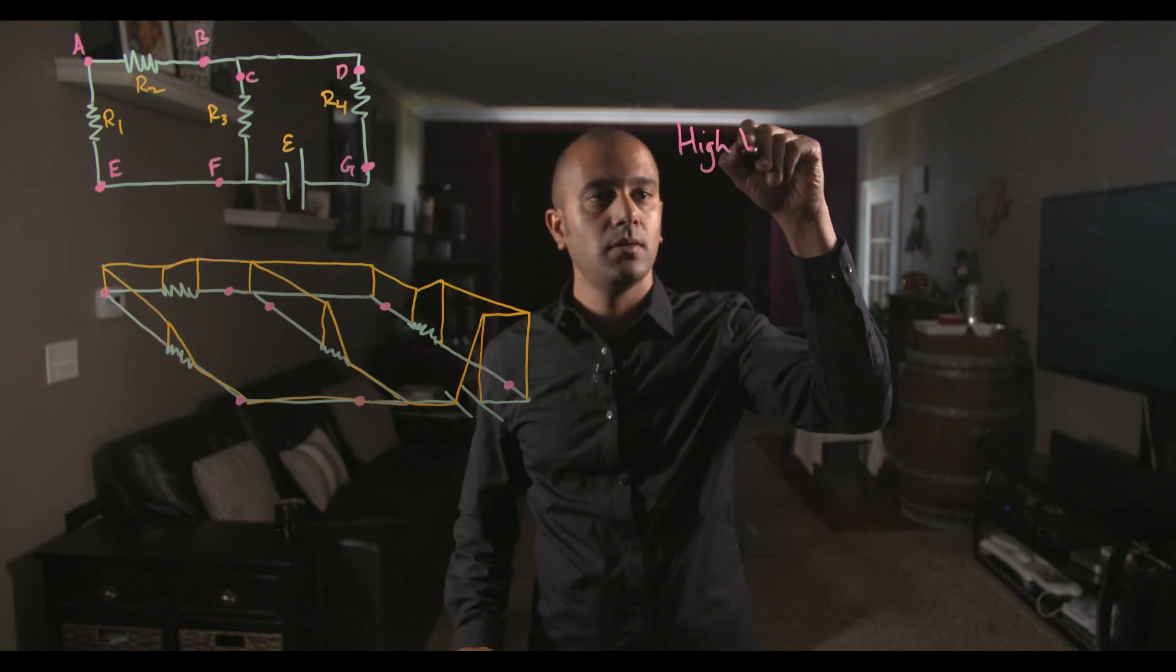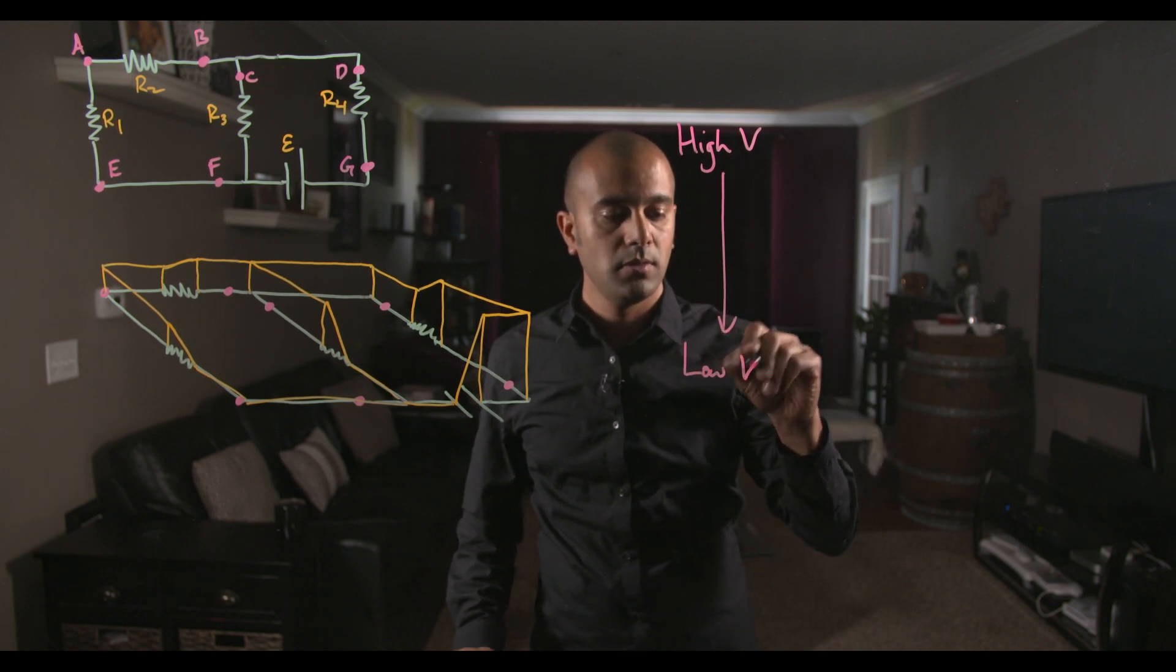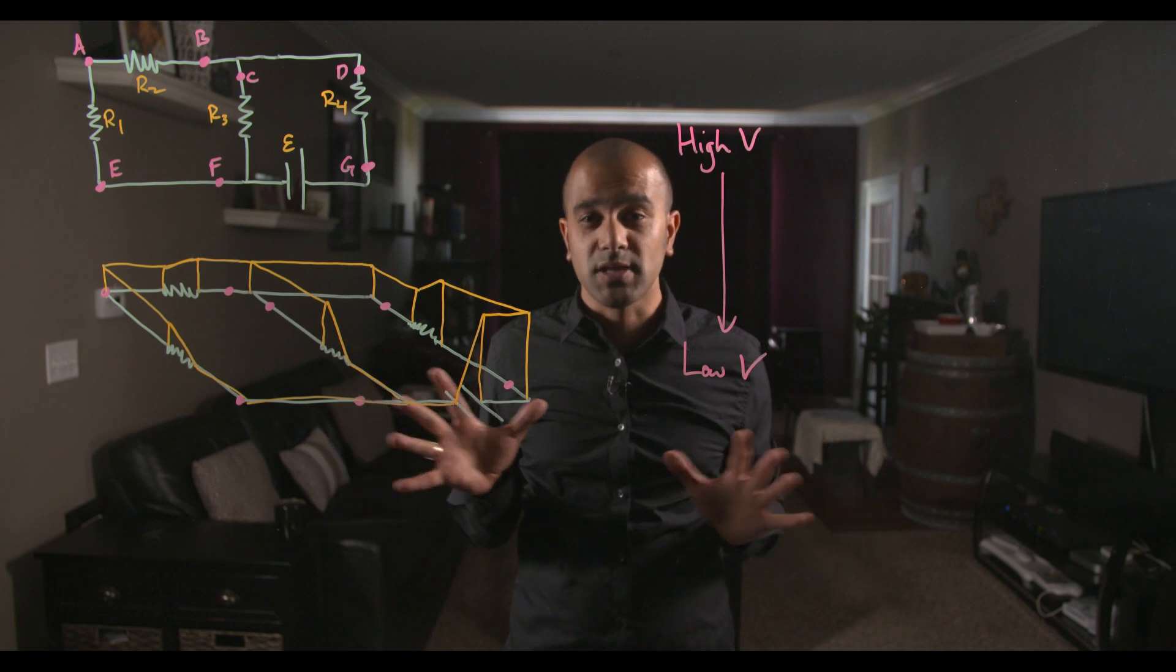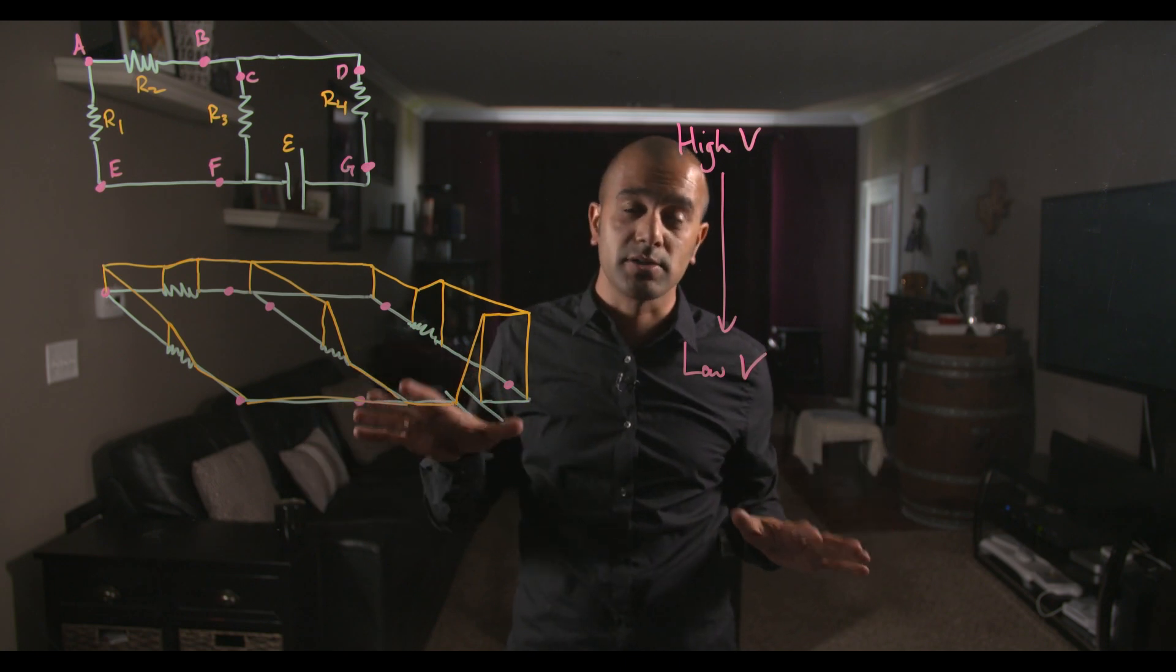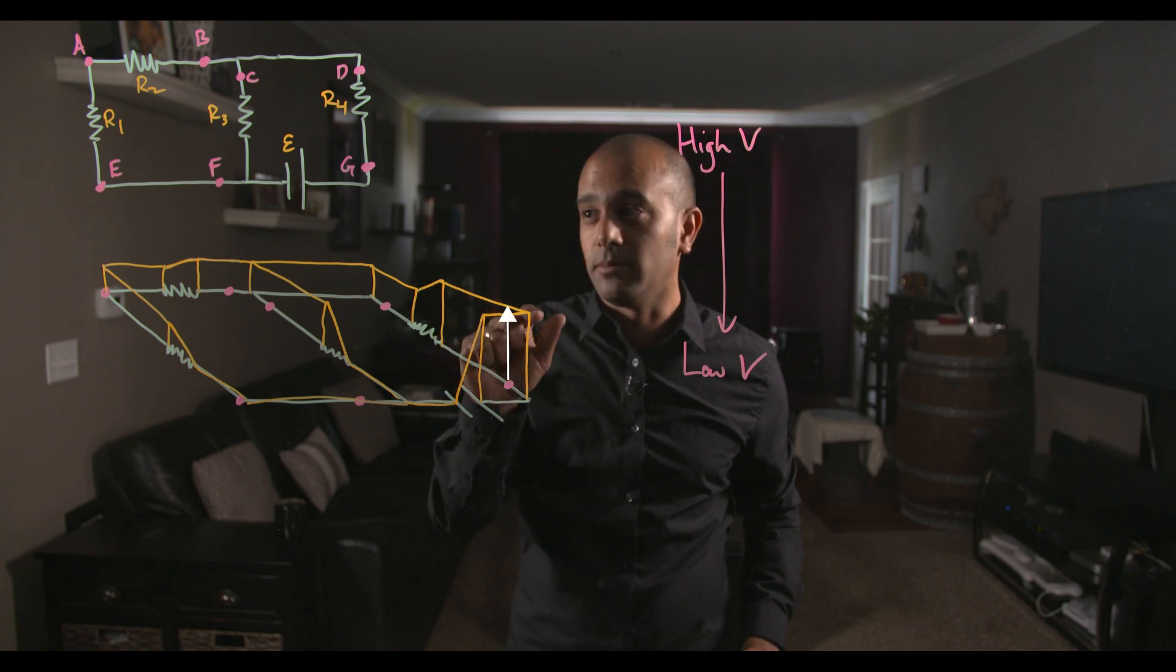The first question says we want to rank the potentials in the circuit diagram at all the points A through G. Now our voltage map pretty much makes this entirely clear for us where the voltage is highest or where the potential is highest and where it's lowest. It's of course the highest right after the battery.